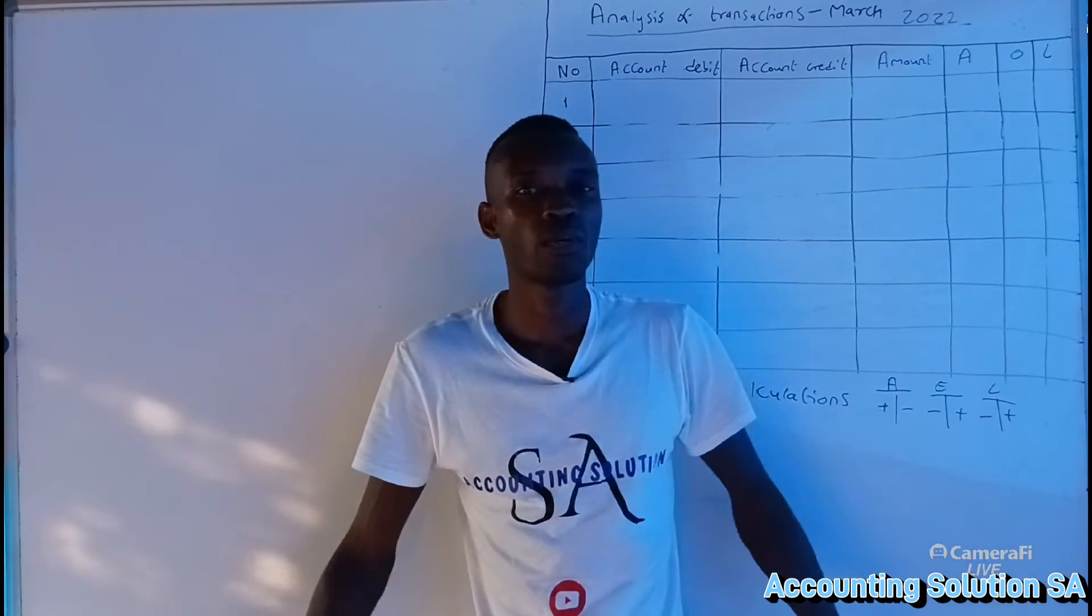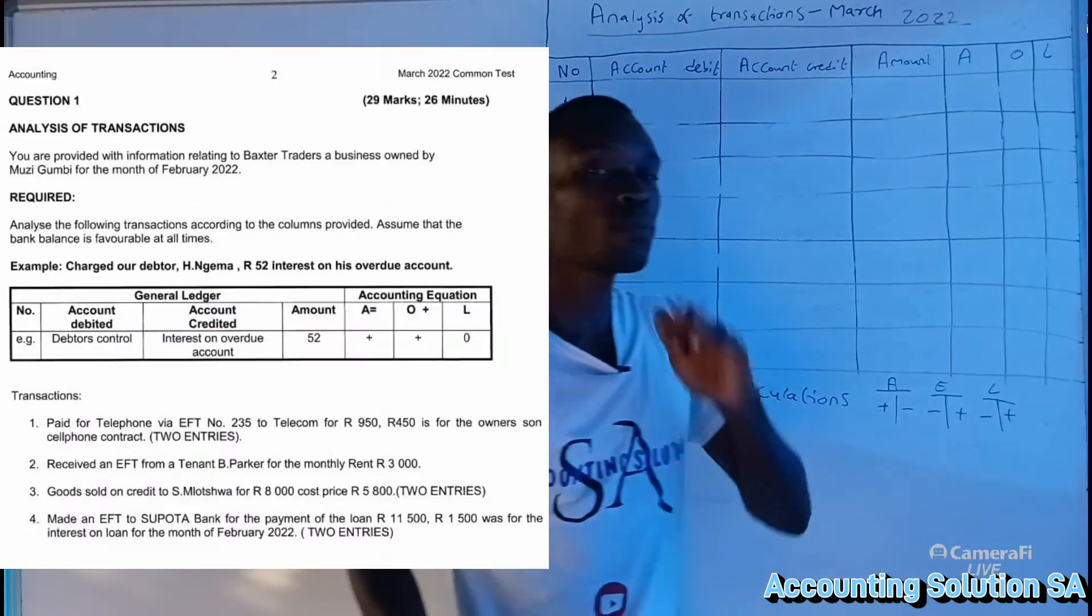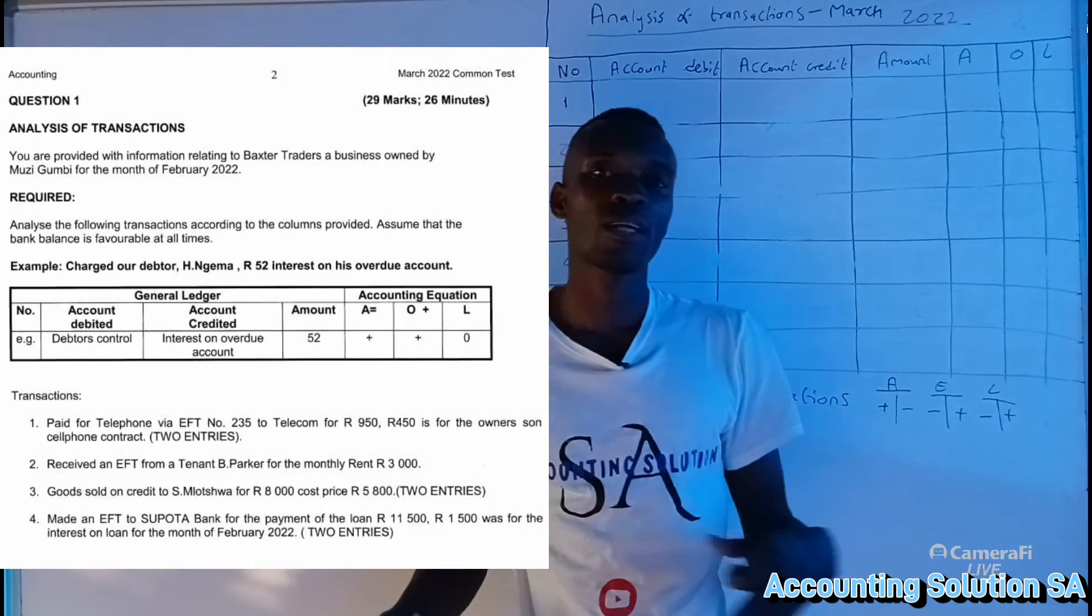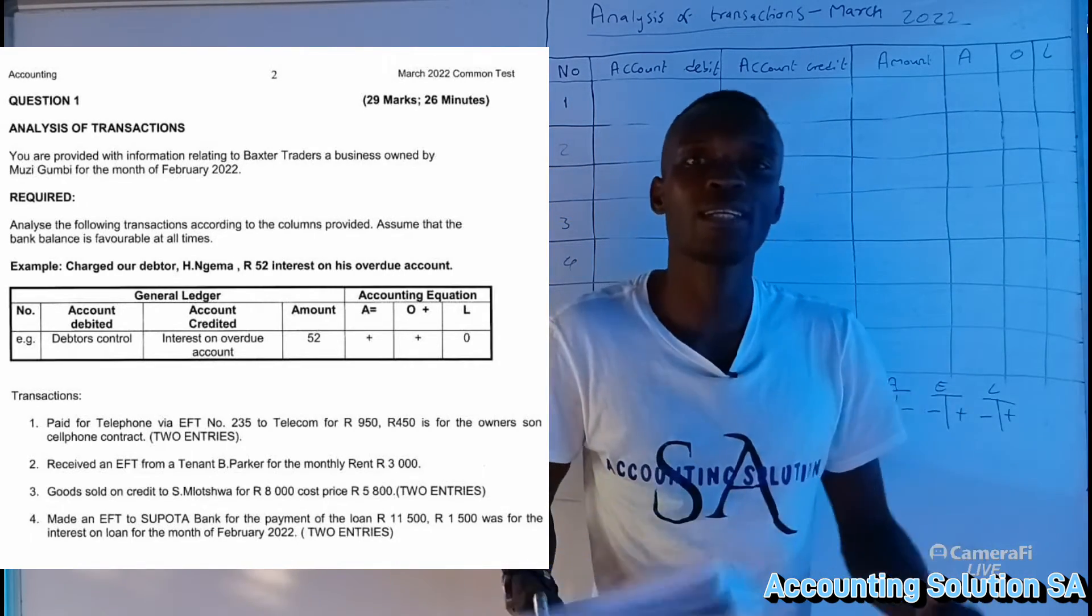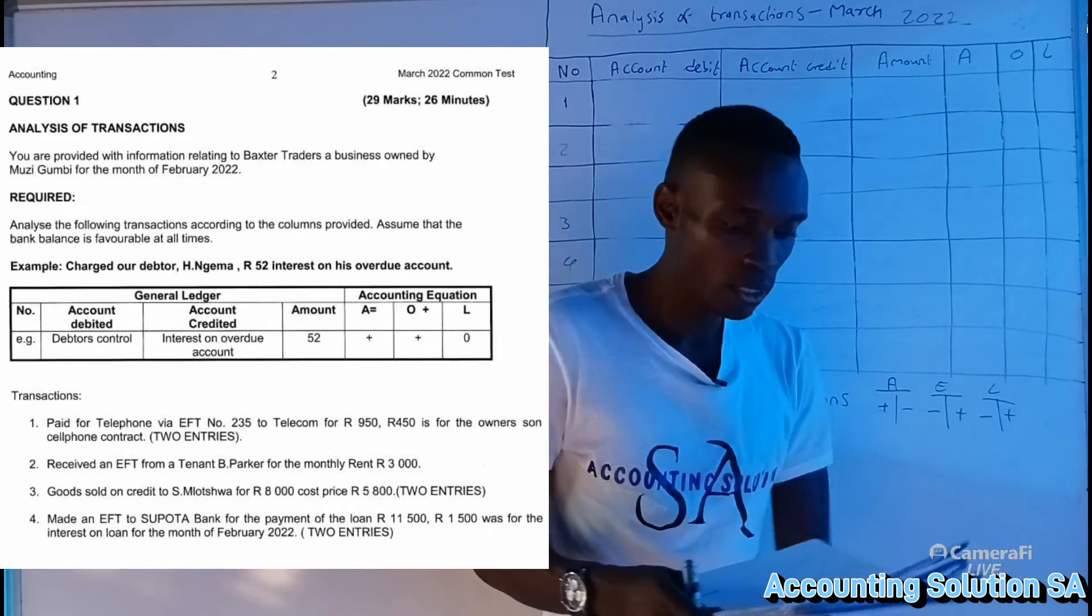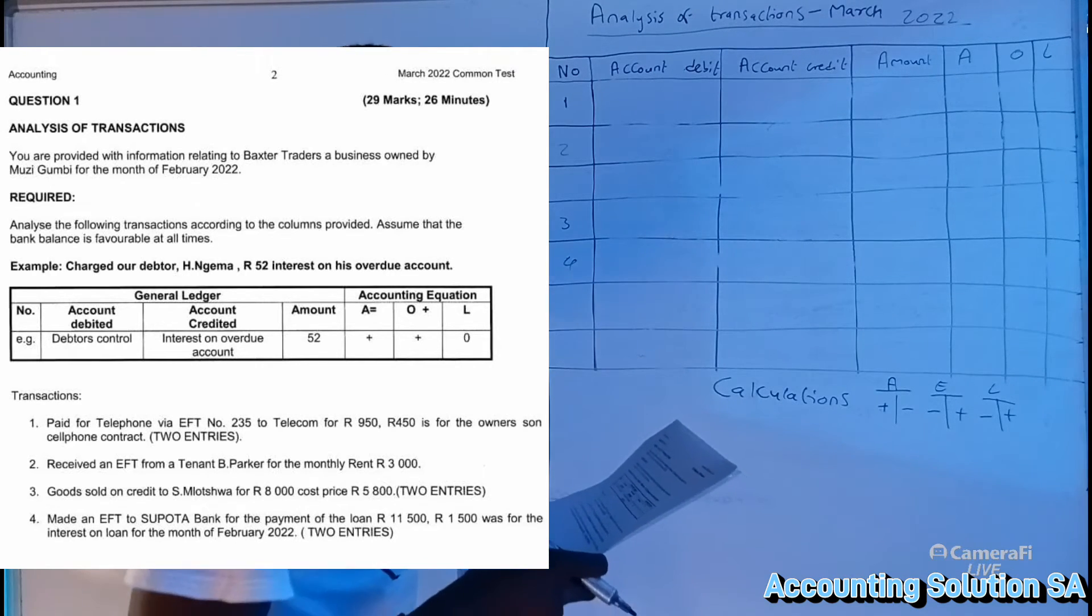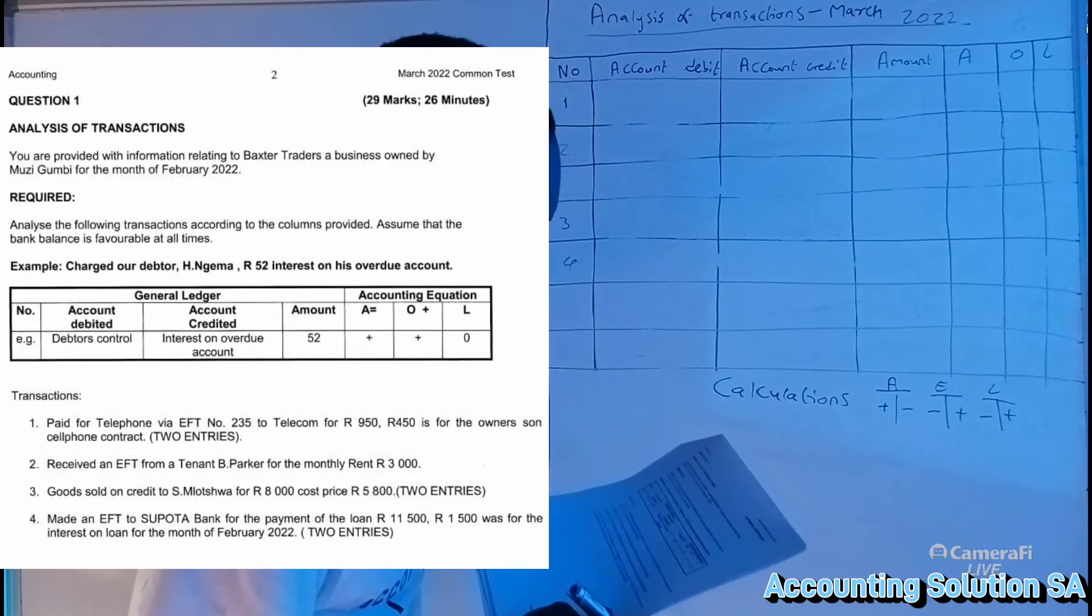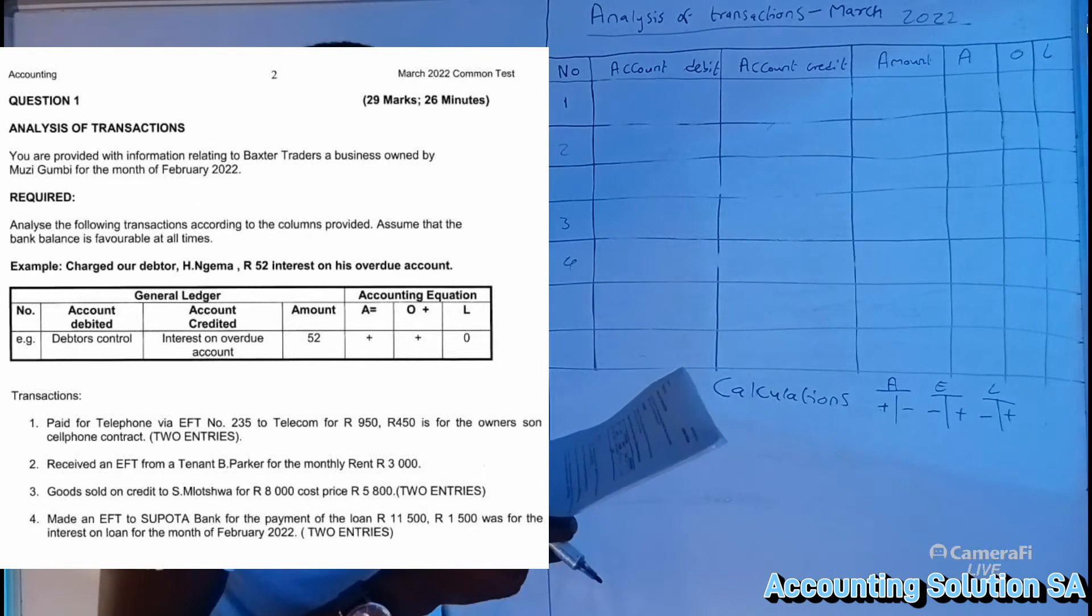Hi grade 10, in this video we are going to do analysis of transactions for the question paper that was written in March 2022. Please make sure that after you have completed this video, go and check the other previous papers like 2023, 2021, 2019, 2020, and other questions that are related to this chapter so that you can master it in and out. Let's go through the question paper. You are provided with information related to Bakwa Traders, a business owned by Mozi Gumbi, for the months of February 2022.